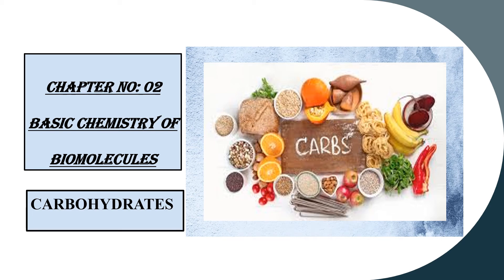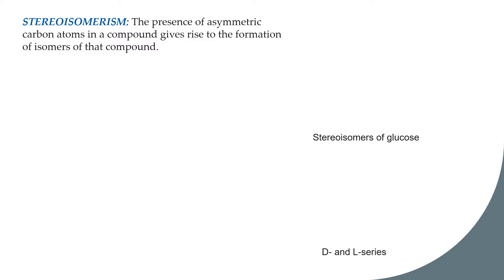Today is the last part of the chapter on carbohydrates, and we will be discussing stereoisomerism. Stereoisomerism arises from the presence of an asymmetric carbon atom in a compound, which gives rise to the formation of isomers of that compound. A compound that has an asymmetric carbon will show this property called stereoisomerism.